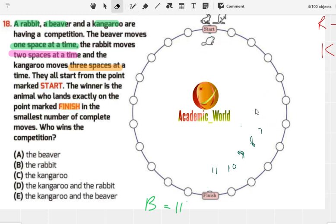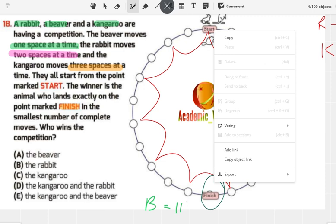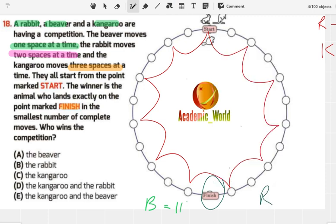Now I will check the rabbit's number of jumps. The rabbit moves two spaces at a time: one, two, three, four, five, six, seven, eight, nine, ten, and eleven. It means that the rabbit is unable to reach at this point. The rabbit will not reach its destination at the finish mark by following the instructions if the rabbit moves two spaces at a time.